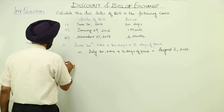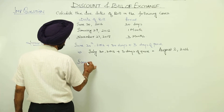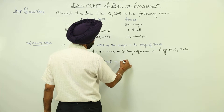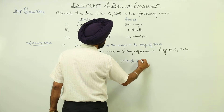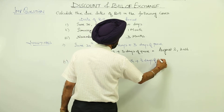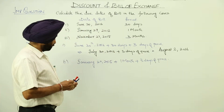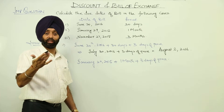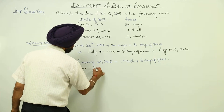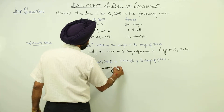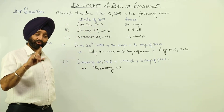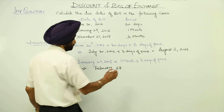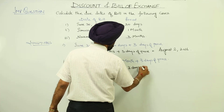Second part: January 29th, 2015, plus 1 month. Now here, be careful. After January we are having February. So this will be equal to February 28th, because 1 month means February and 2015 was not a leap year. So it is February 28th, plus 3 days of grace.